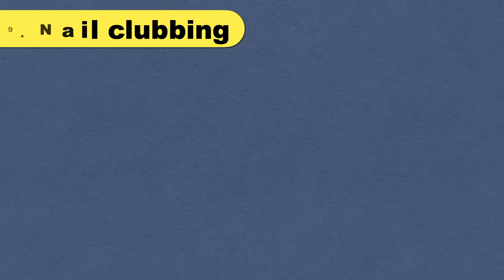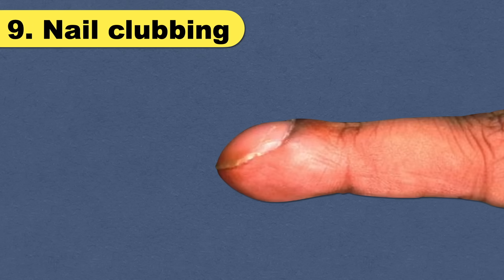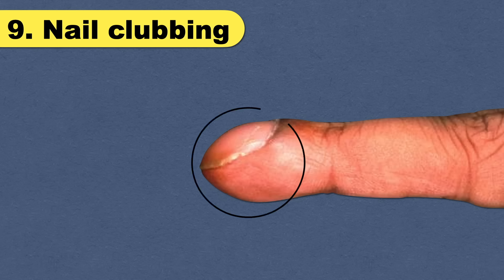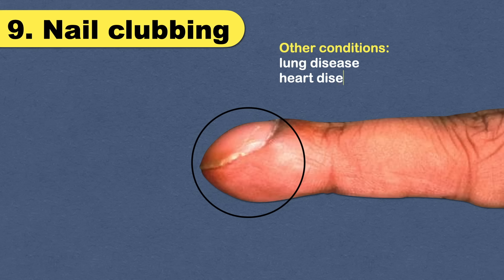Nail clubbing is also an important manifestation of chronic liver disease or cirrhosis. It occurs when the tips of the fingers enlarge and the nails curve around the fingertips. It is also seen in many other conditions like lung disease, heart disease, and inflammatory bowel disease.